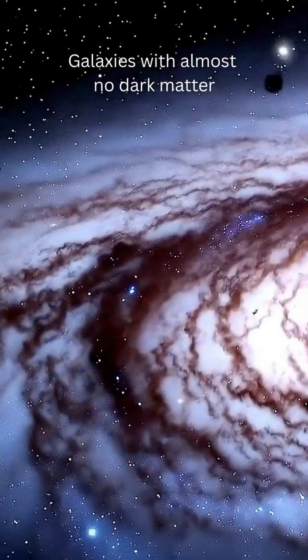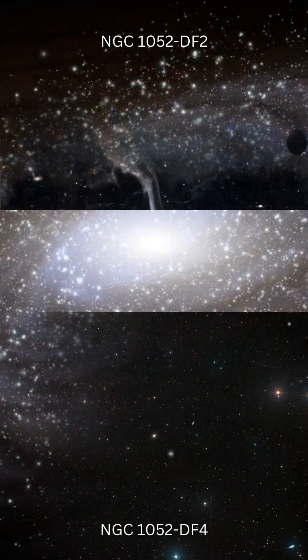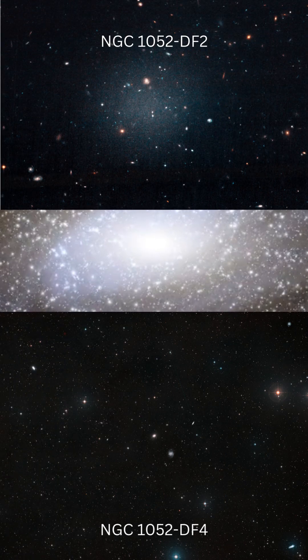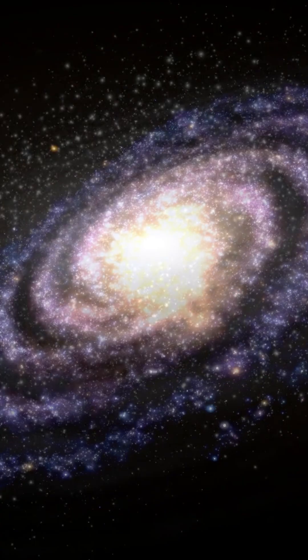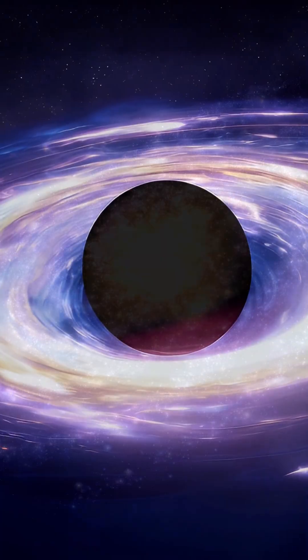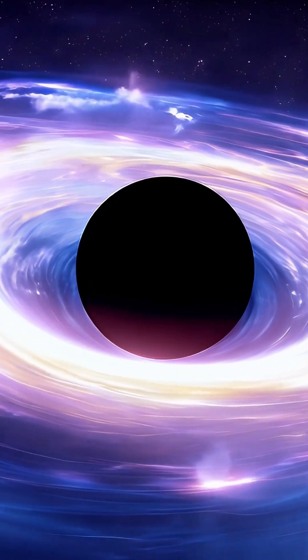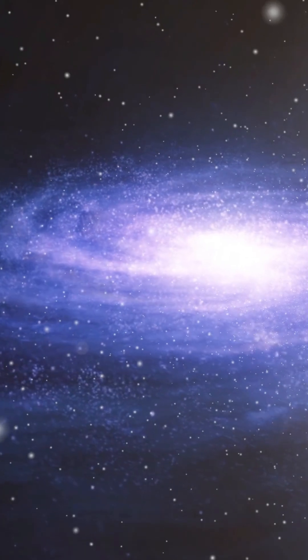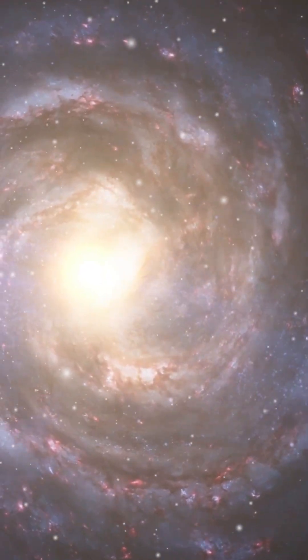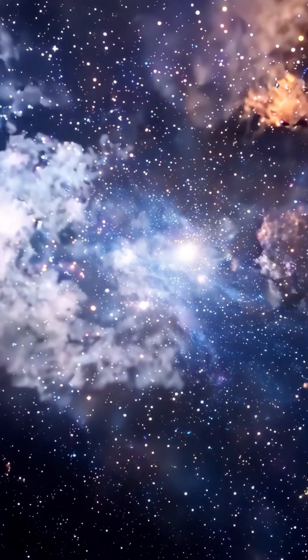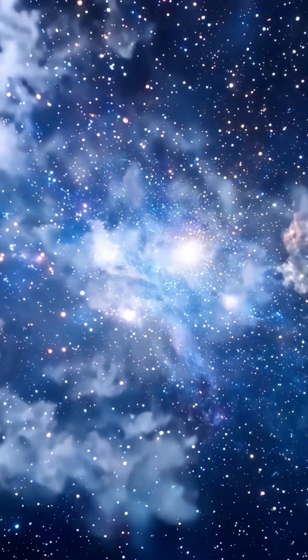Galaxies with almost no dark matter. Two galaxies discovered by our space telescopes, DF2 and DF4, behave like normal galaxies but lack the one ingredient that should be holding them together: dark matter. The galaxies have stable structure, look just like any other galaxies and act just fine, even though they defy the rules of galaxy formation.